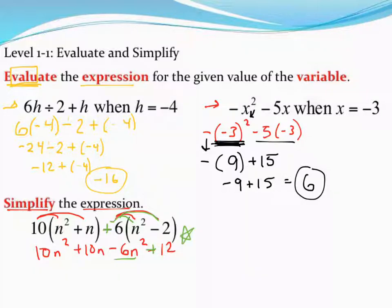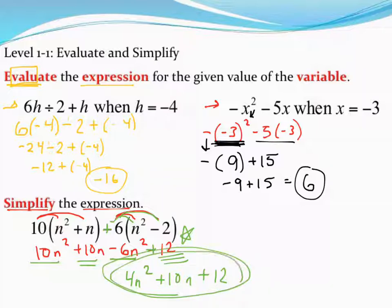Now I'm not done because I do have like terms to combine. Like terms are here and here. They have the same variables with the same exponent. So I'm going to add up the coefficients and get 4n². 10n doesn't have any like terms with it, so that just carries down as part of my answer. And then same with this positive 12. There's no like terms to combine it with, so just a plus 12. This is then my simplified answer. Notice it's not a single number. It's an expression.